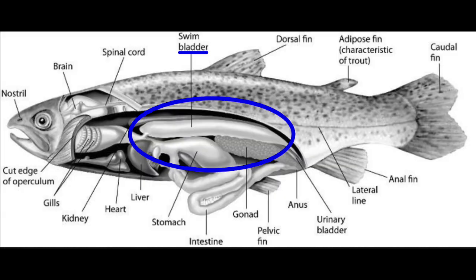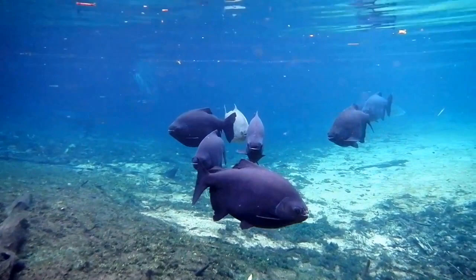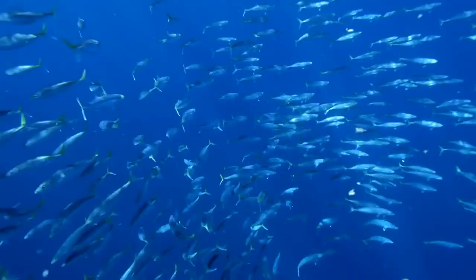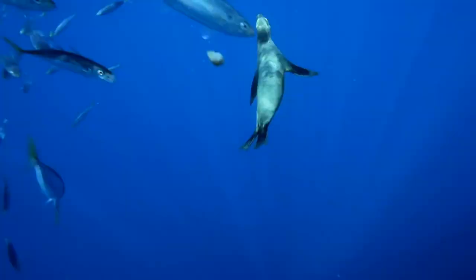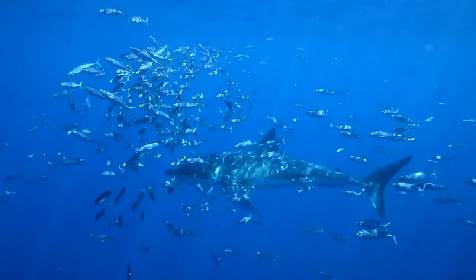Having a swim bladder gives them the advantage to adjust their buoyancy freely, meaning they'll be able to float on water and swim, and also stop swimming at any time they want. As opposed to the Chondrichthyes, which do not have a swim bladder and, in fact, have to be swimming all the time, or else they'll just sink to the bottom.